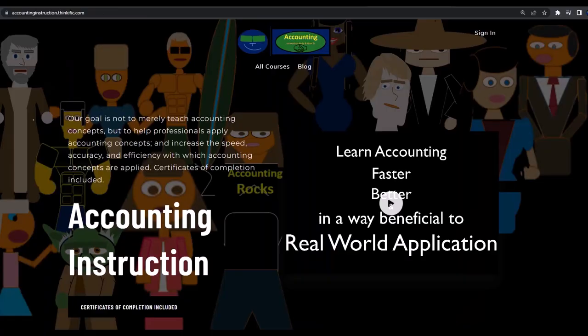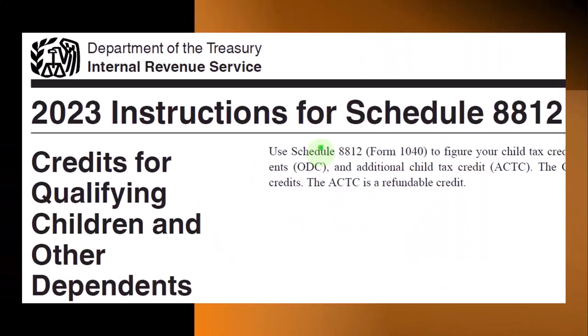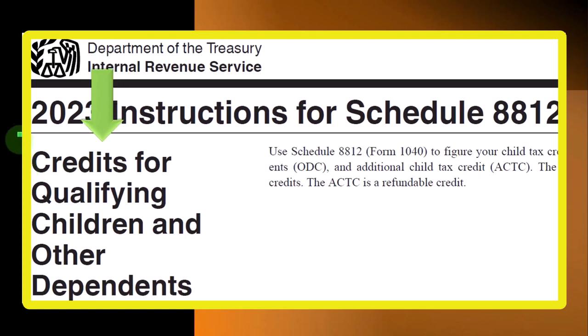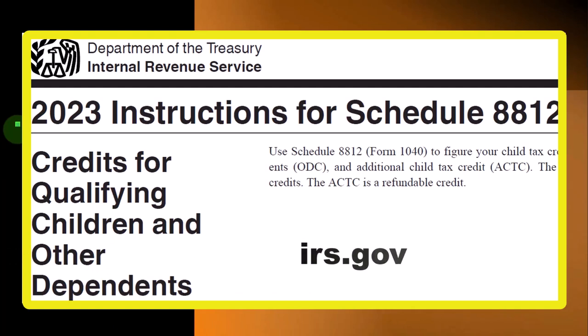If you would like a commercial-free experience, consider subscribing to our website at accountinginstruction.com or accountinginstruction.thinkific.com. Most of this information can be found in the Schedule 8812 instructions, Credit for Qualifying Children and Other Dependents, Tax Year 2023, which you can find on the IRS website at irs.gov.